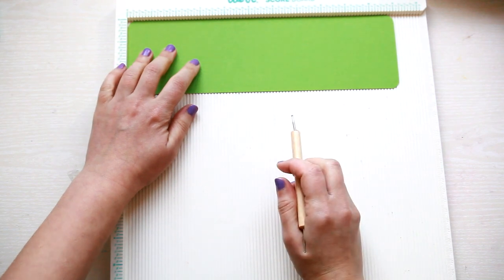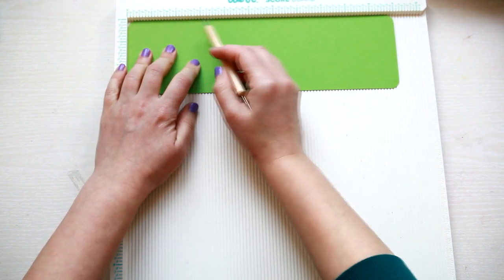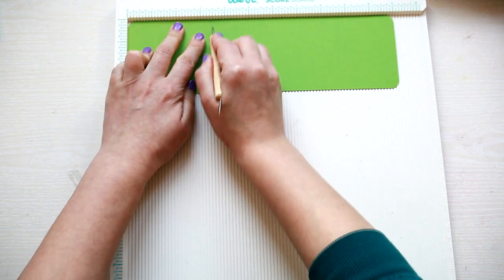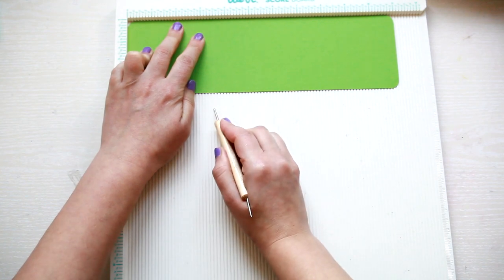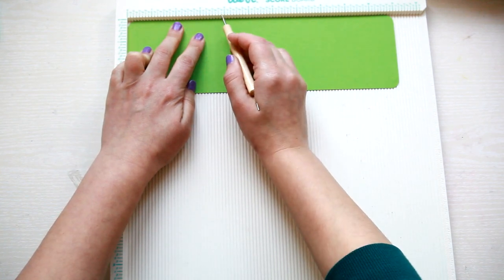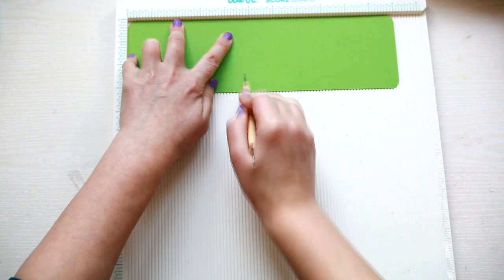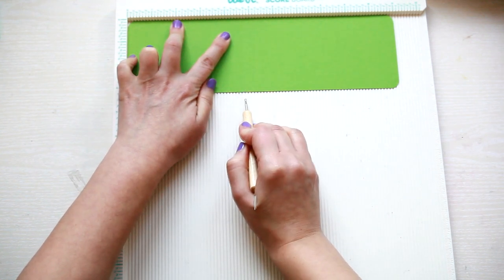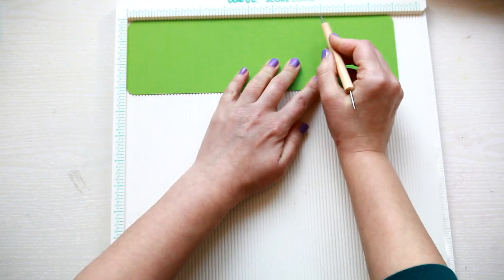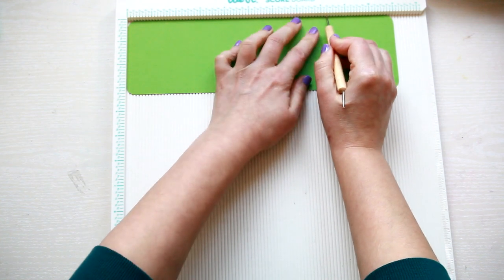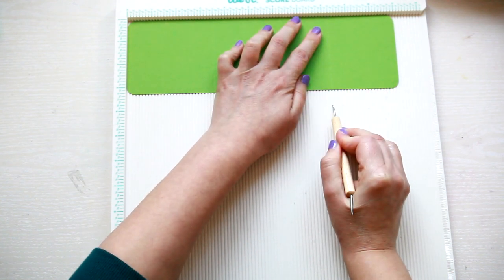Then you need to score at 3 1/2 inches, 4 and 3/4 inches, 8 1/4 inch and 9 1/2 inches.